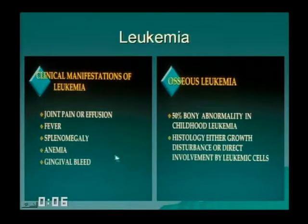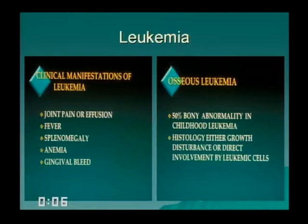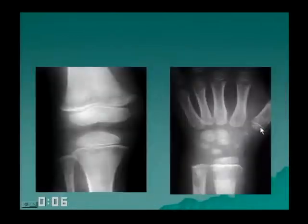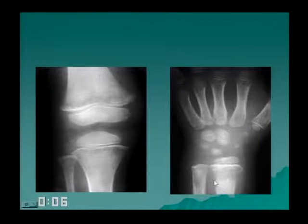50% of children with leukemia have some bony abnormality. The histology of the bone abnormality is not always leukemic in nature — it may reflect the influence of leukemia on bone growth, causing growth disturbance, or it could be direct leukemic involvement. Submetaphyseal lucent bands mostly represent failure of ossification of osteoids, not leukemic cells, whereas frank bone destruction in the distal radius is more likely to represent a leukemic focus.